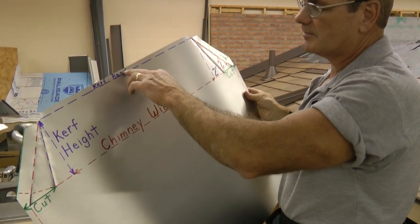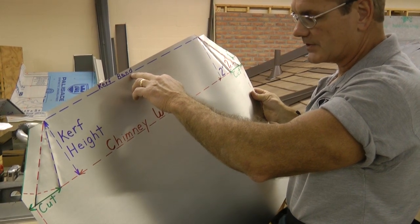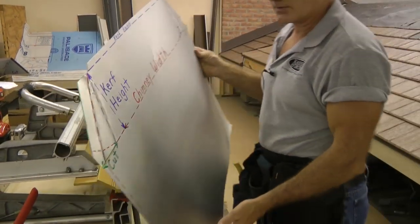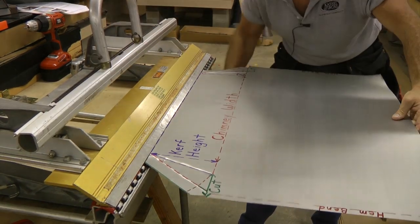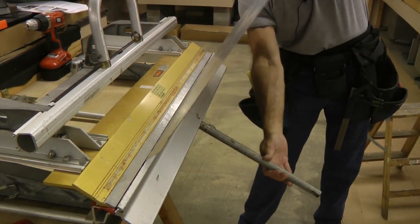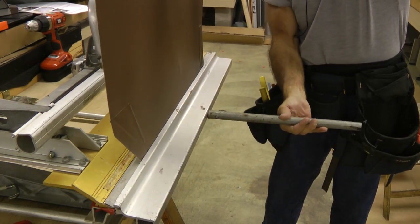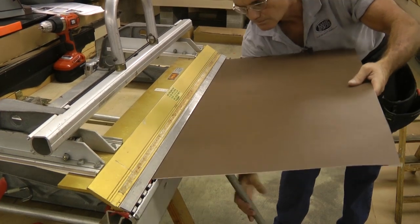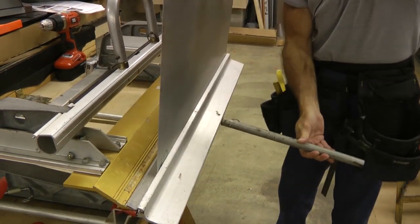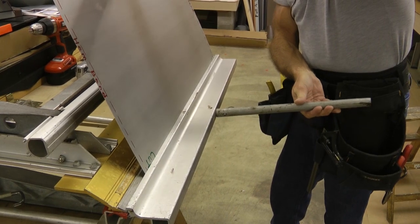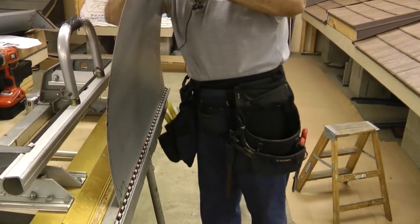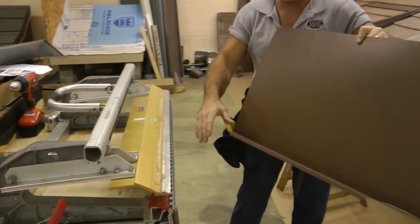I'm going to bend the blue line up at the top first. And then recall that my red line at the base of the chimney will be bent the opposite direction. I'm going to bend this a little past 90 degrees because this is the back side of the chimney. And I have to account for the roof slope.